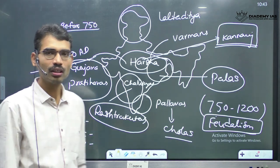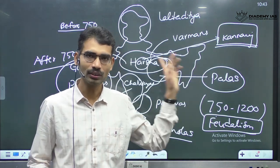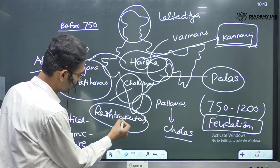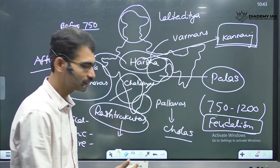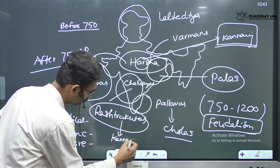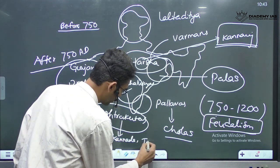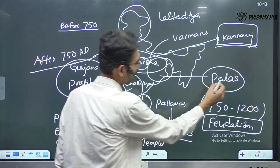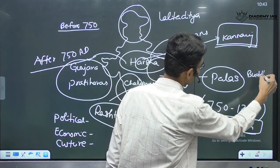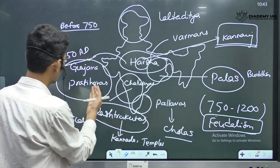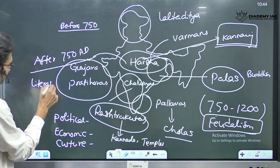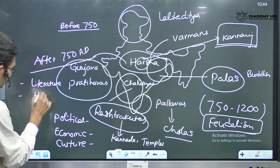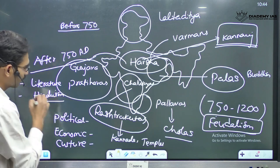Culture was also an important chapter in this period. Rashtrakutas patronized art and culture with respect to Kannada literature. They built temples — best example, Ellora Temple. Similarly, Palas also patronized Buddhism. When it comes to Gurjara Pratiharas, they also patronized literature. And Hinduism-related culture was also patronized.